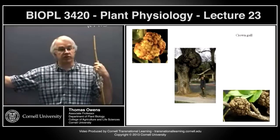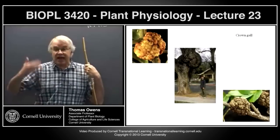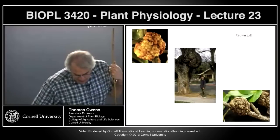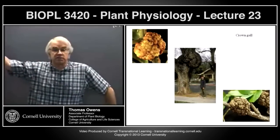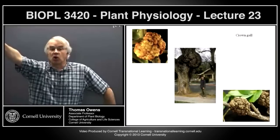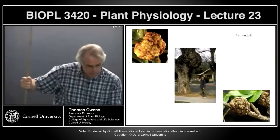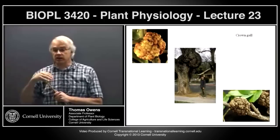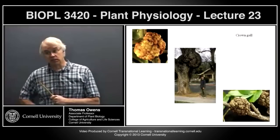Root cells will continue to divide, so they must be producing everything they need. Non-root cells must be missing something. One of the first things discovered was liquid endosperm from coconut — coconut milk. Adding it to culture medium caused shoot cells to start dividing. Another discovery was that if you take vascular cambium cells from a woody plant, grind them up, and put the extract into culture, the cells will divide.